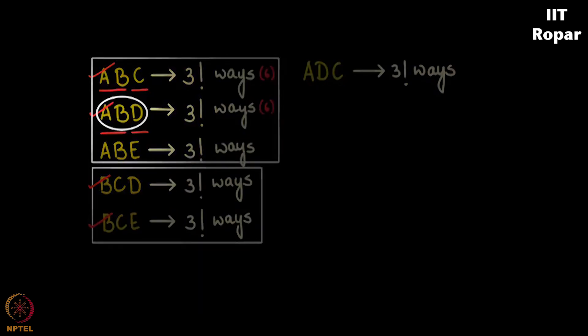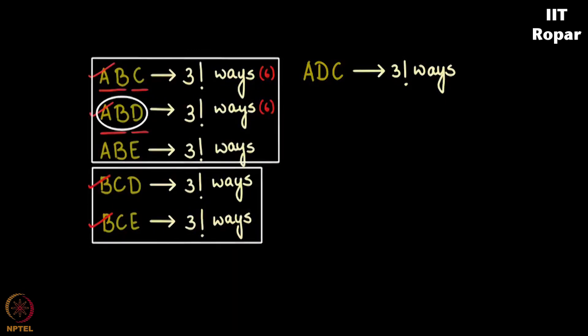A, D along with B is over, A, D along with C just got over. A, D along with E, three factorial permutations. And that ends all possibilities with A, D.